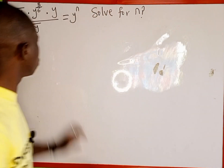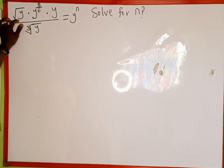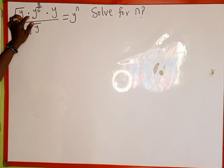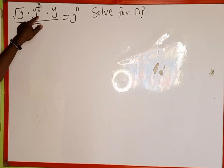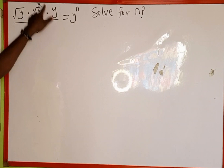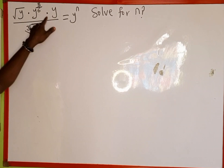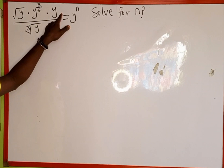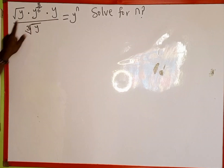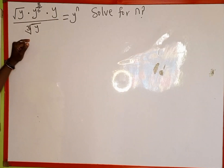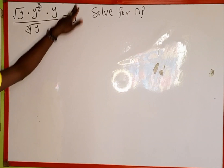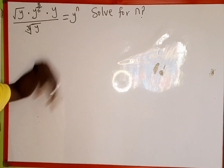The given equation is: the square root of y, multiplied by y raised to the power of 5 over 6, then multiplied by y, then divided by the cube root of y, equal to y to the power of n.